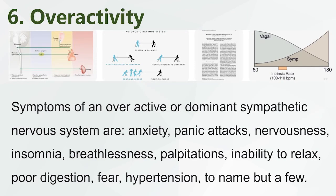Overactivity: Symptoms of an overactive or dominant sympathetic nervous system include anxiety, panic attacks, nervousness, insomnia, breathlessness, palpitations, inability to relax, poor digestion, fear, and hypertension — to name but a few.